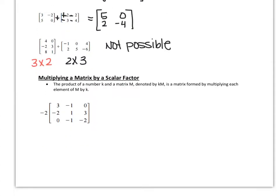Let's move on to multiplying a matrix by a scalar factor. The product of a number K and a matrix M, denoted KM, is a matrix formed by multiplying each element of M by K. Very simply put, we're basically going to distribute this negative 2 to all of the elements in the matrix.